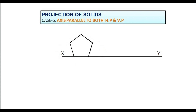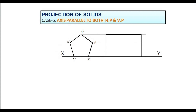Join these points to complete the pentagon. Name the corners of the pentagon as 1 double dash, 2 double dash, etc., up to 5 double dash. To draw the elevation, draw projectors horizontally. Maintain the length of the prism in the elevation. Darken the required lines and name the edges accordingly.